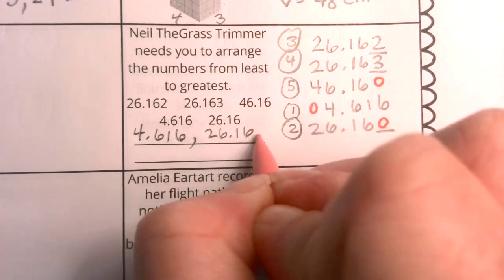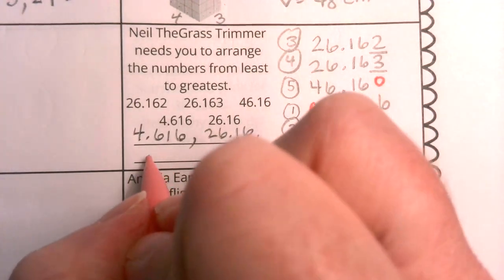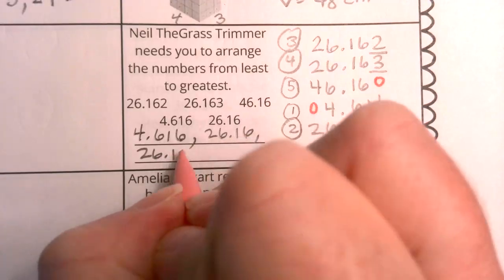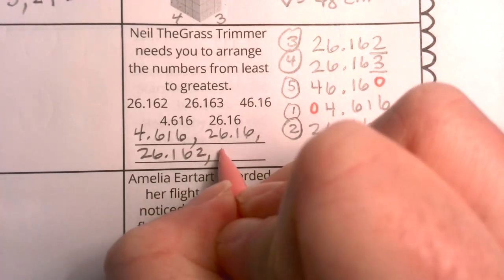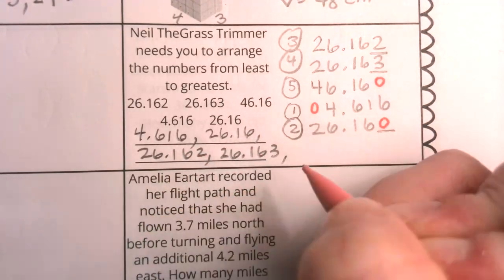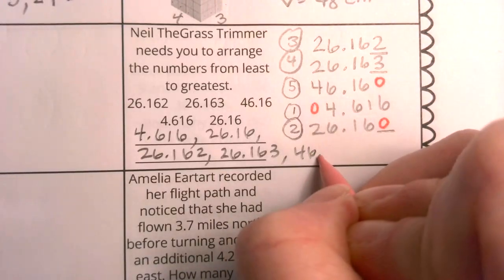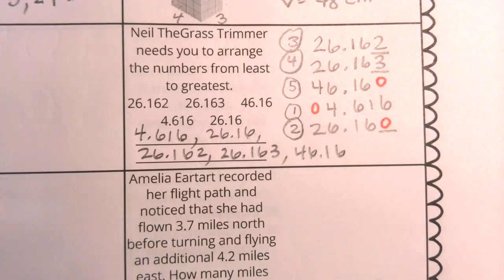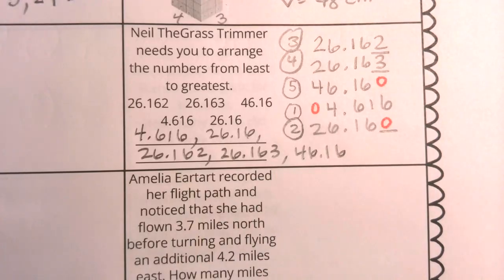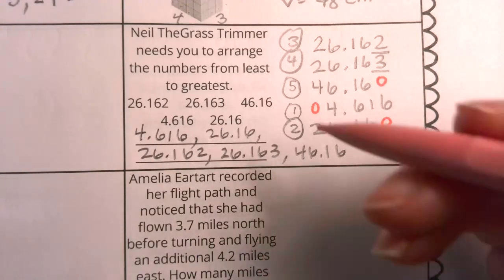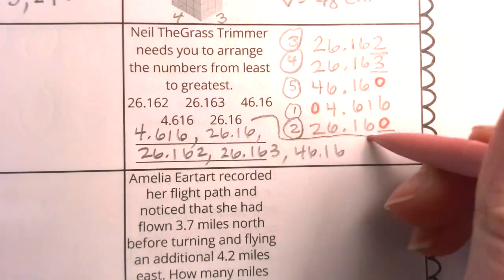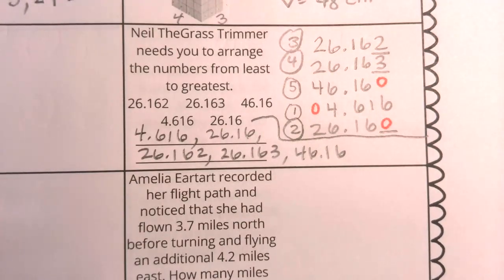So that's my first number. This is my second number. This is my third number, my fourth number, and my fifth number. So that is the answer to the ordering of decimals question. And I might draw a little line just to make it clear that that's different than my scrap work.